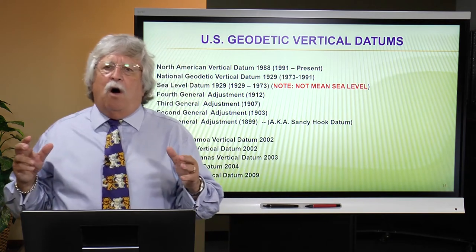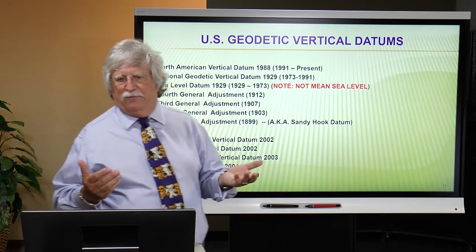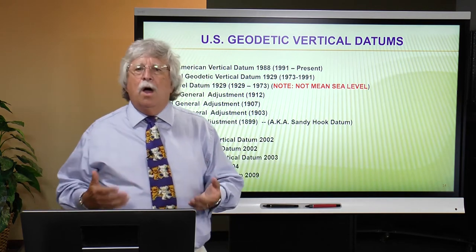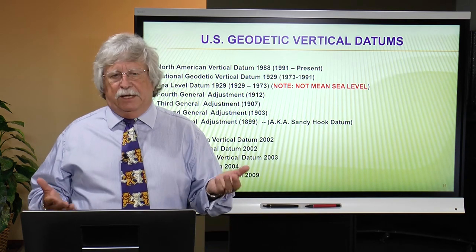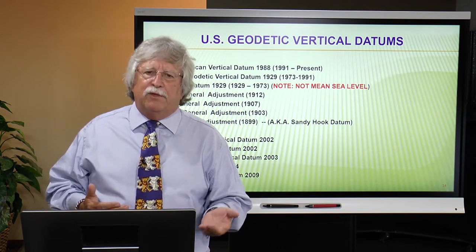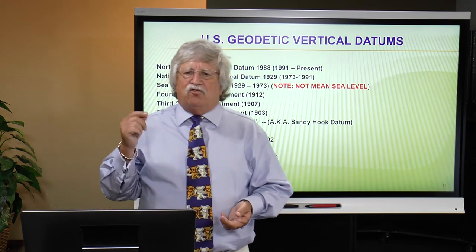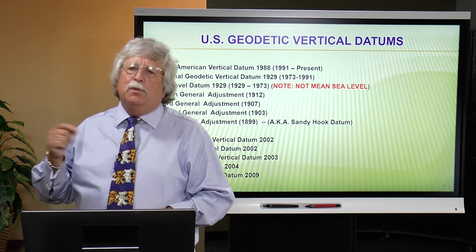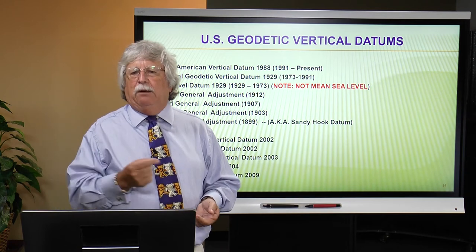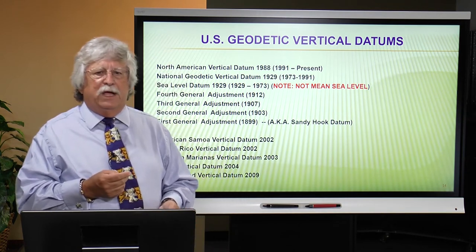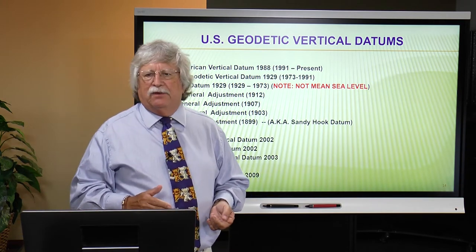It was not truly mean sea level, just sea level. It was often confused by many others as the 'Mean Sea Level Datum of 1929,' as though there is mean sea level in Des Moines, Iowa — no, there is no such thing. The name was changed in 1973 to the National Geodetic Vertical Datum of 1929 — NGVD-29 — to remove any confusion with mean sea level. There was no change in heights whatsoever; it was simply a name change.